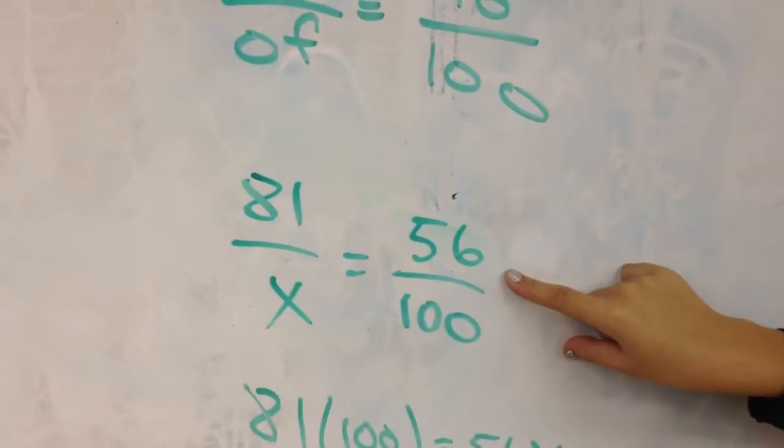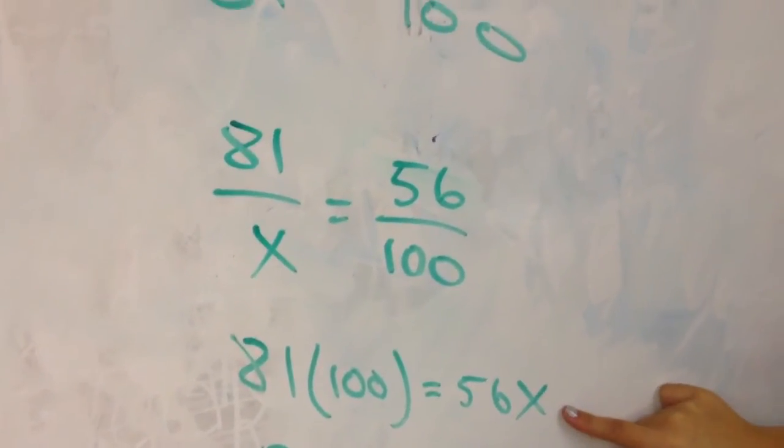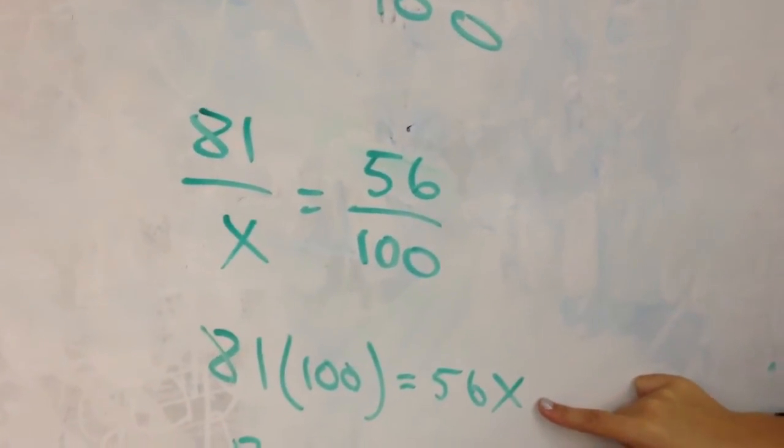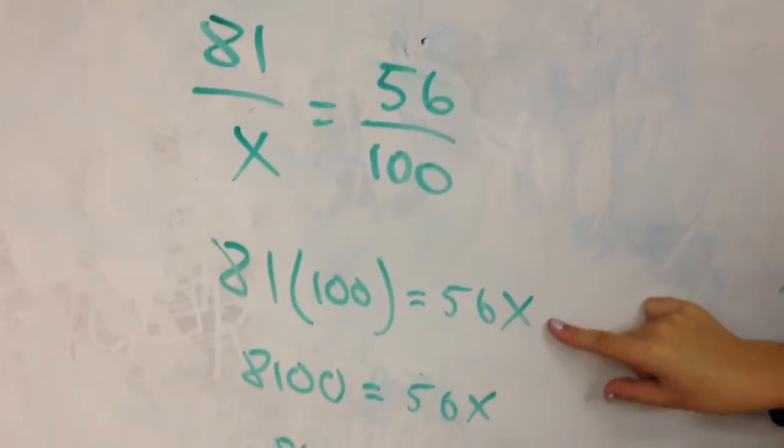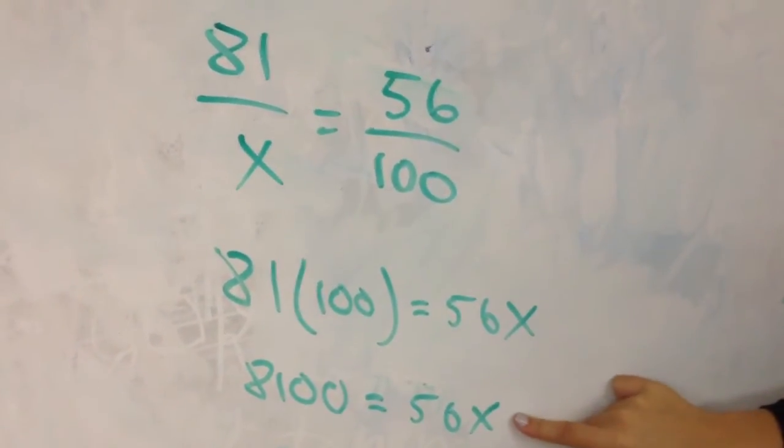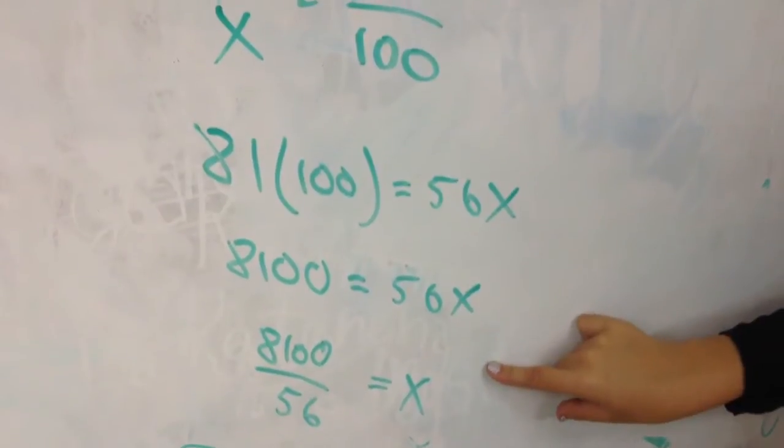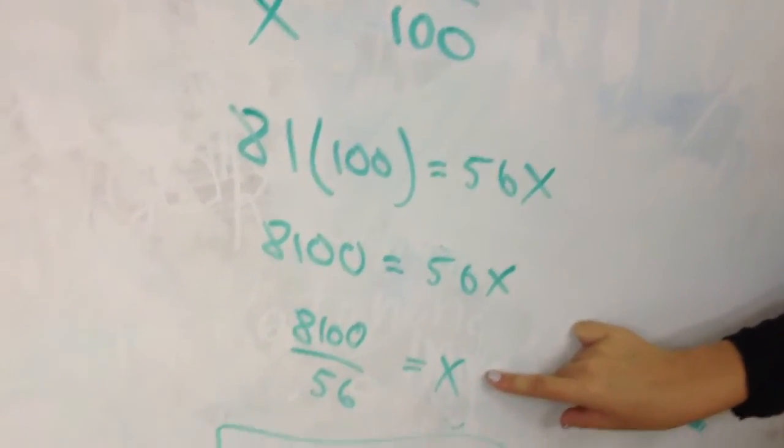We do this by cross multiplication, so 81 times 100 equals 56x. 8100 equals 56x. And then we have to do 8100 divided by 56, that equals x.